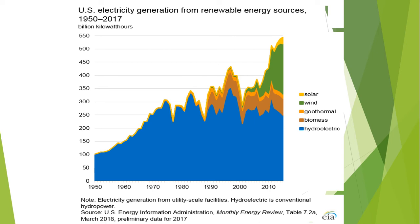This graph shows generation of electricity from renewable energy sources from 1915 to 2017. The major portion is from hydroelectric, and the remainder is a combination of biomass, geothermal, wind, and solar. The solar contribution is relatively very small compared to hydroelectric generation.